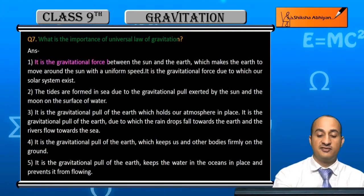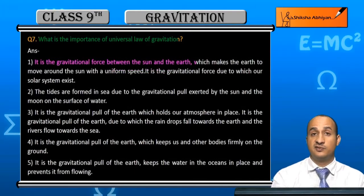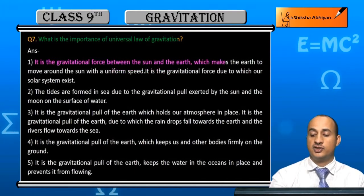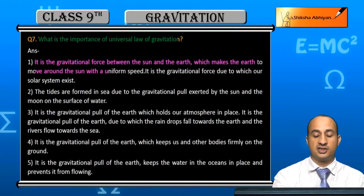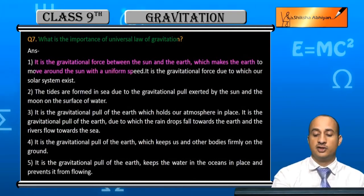Because it is the gravitational force between the Sun and Earth which makes the Earth move around the Sun with uniform speed.